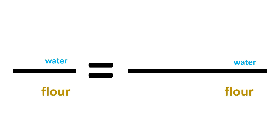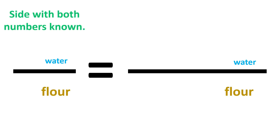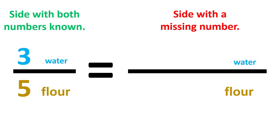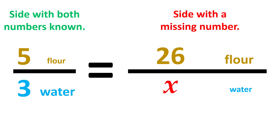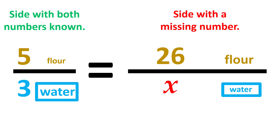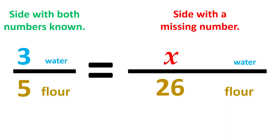To set up the cross-multiply and divide method, we write two division bars separated by an equal sign. The top numbers must have the same units as each other, and the bottom numbers must have the same units as each other. The known numbers — the ratio between water and flour — go on the left. We fill in the 26 ounces of flour she has, and use X for what we don't know. We just have to be consistent so that units match on both sides of the equation.